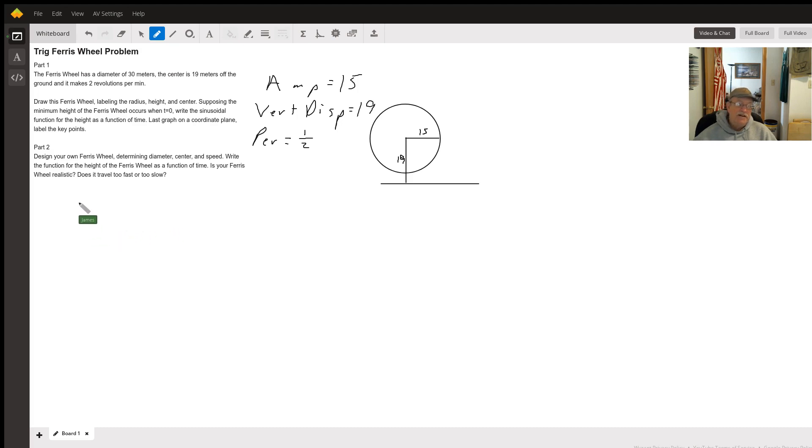So our function is going to start off. Since we're starting at the bottom, t equals zero, that tells us we're going to use cosine, and it's going to be negative. So it's going to be negative 15, since 15 is the amplitude, cosine.